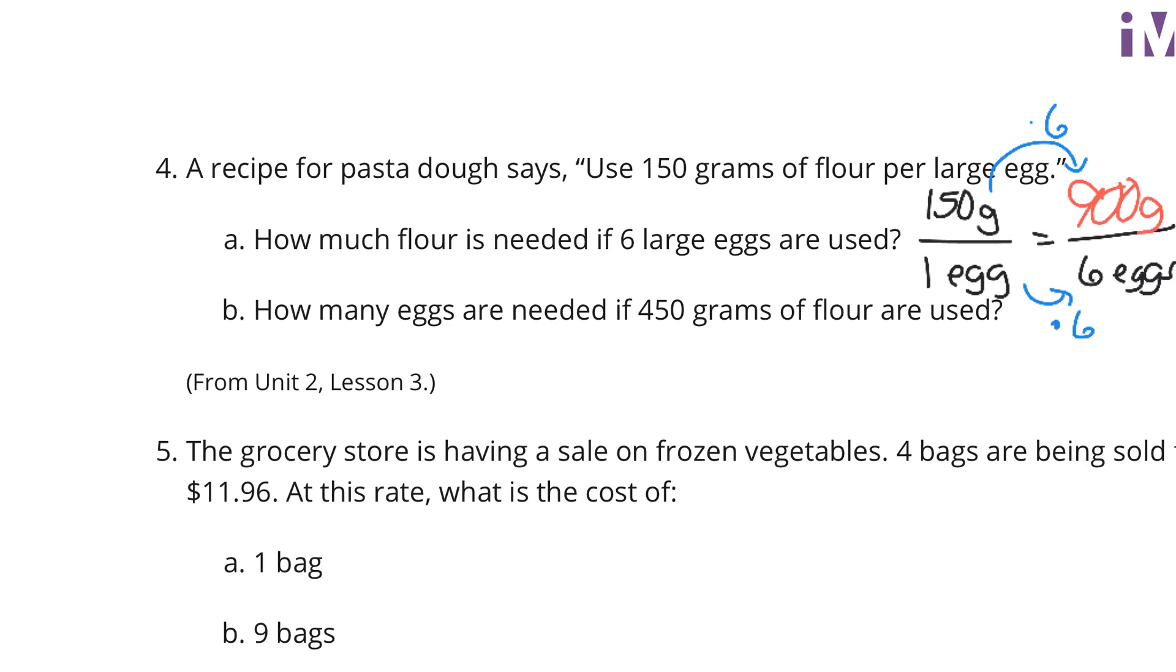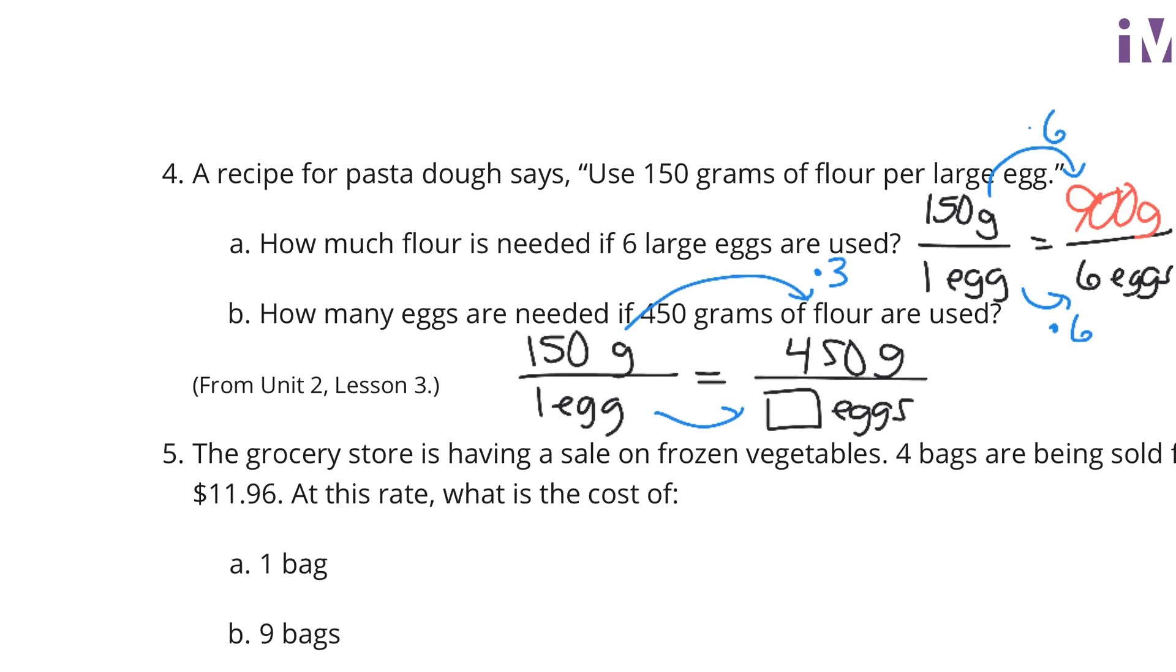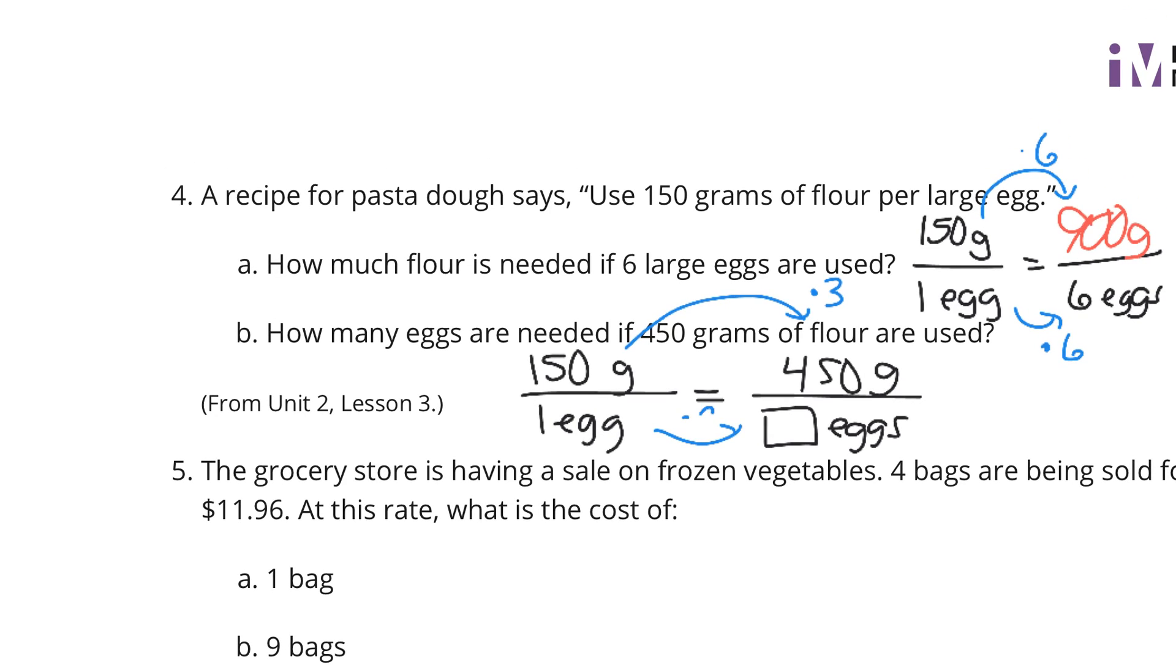How many eggs are needed if 450 grams of flour are used? All right. Well, again, if it's 150 grams for the 1 egg, trying to get to how many eggs for 450 grams of flour? Well, 150 times 3 is 450. So 1 times 3 is going to be 3 eggs.